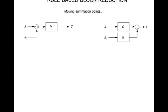So when you move a summation junction to the front of a block then the path should get multiplied by the transfer function of the block.